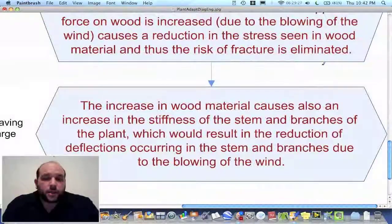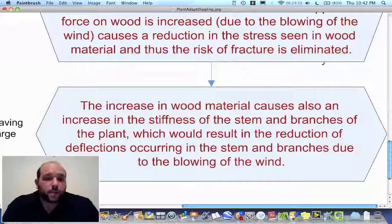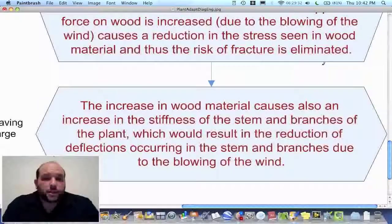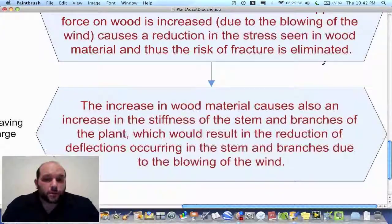The increase in wood material causes also an increase in the stiffness of the stem and branches of the plant, which would result in the reduction of deflections occurring in the stem and branches due to the blowing of the wind.